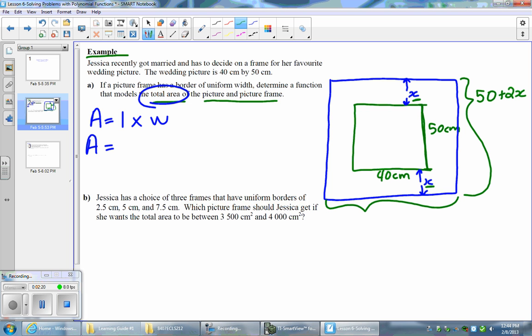So let's model the width now. We know the width of the picture is 40, but including the frame we have to add 2x. So there is my width. Therefore the function that represents the situation is A is equal to length, which is 50 plus 2x, and you're going to multiply this length by the width, so 40 plus 2x.